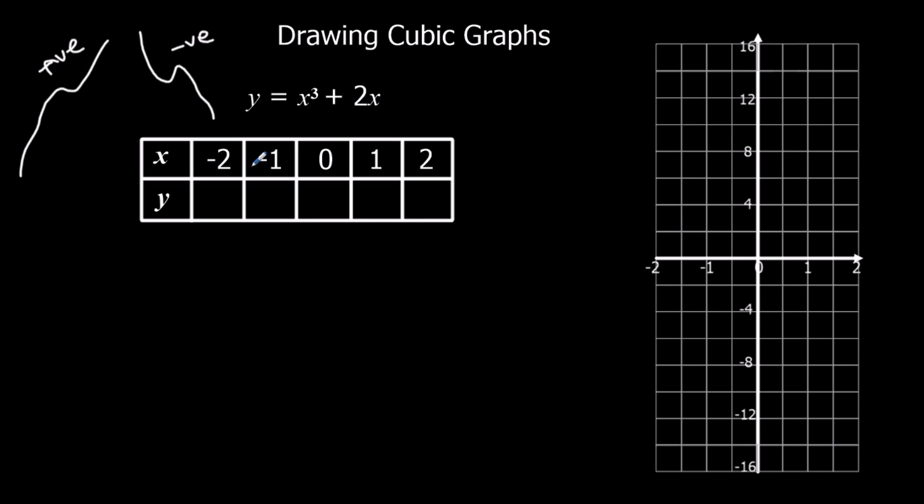So if we've got a calculator, same as a quadratic graph, we can substitute in wherever x is. If we put brackets wherever x is and type this in the calculator, we can just switch for any number that x is to fill up the grid. We're not going to use the calculator here, so we're going to have to work it out for ourselves.